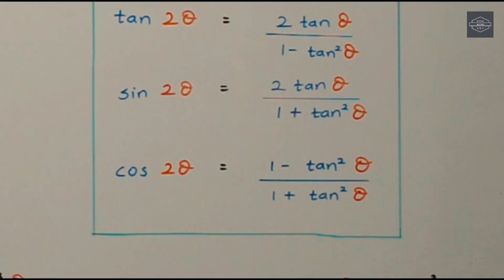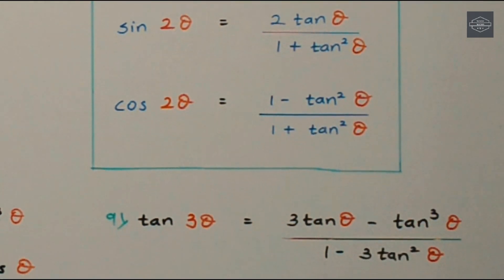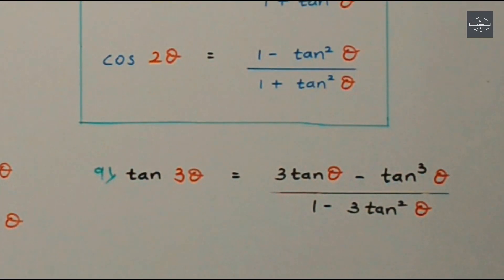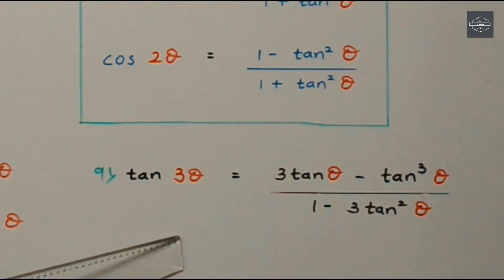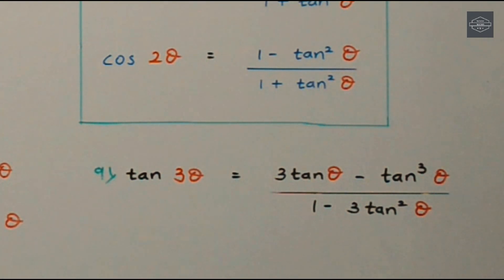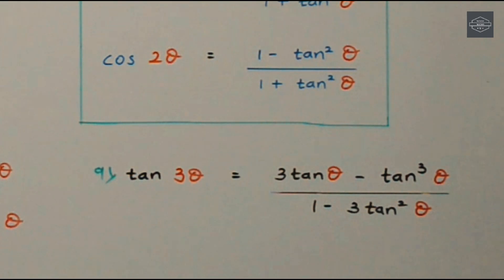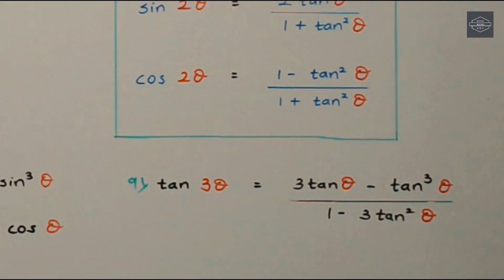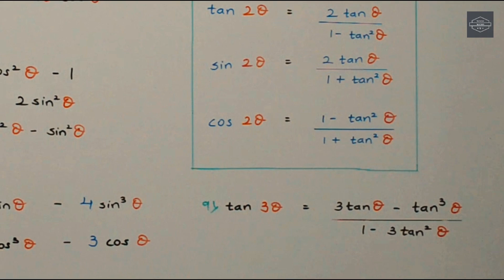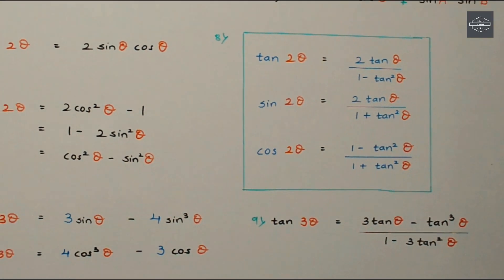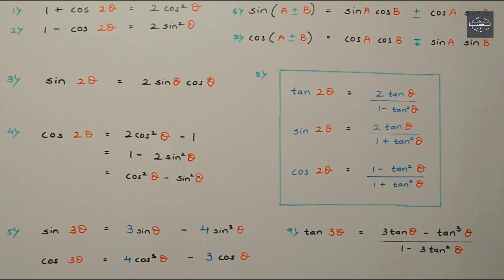The tan 3θ formula is a bit tedious, so creating a rhythm for it is difficult — you'll need to put in a bit of extra effort. The formula is: tan 3θ = (3 tan θ − tan³ θ) / (1 − 3 tan² θ). You need to work a little on this one formula; the rest are quite simple using the technique.